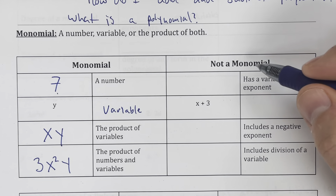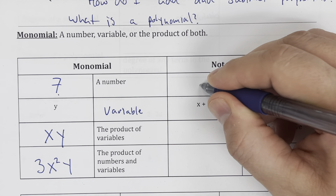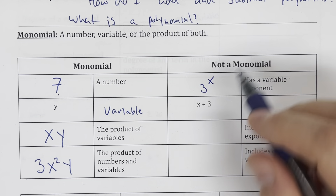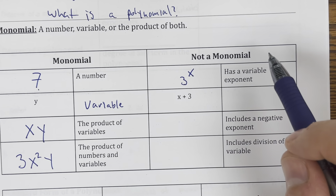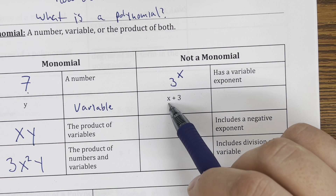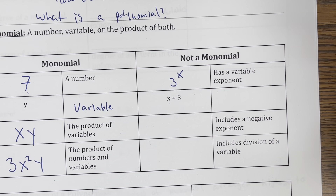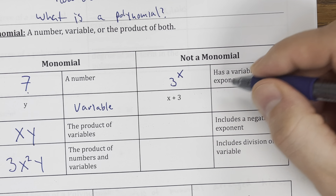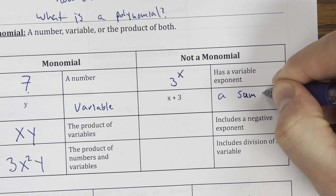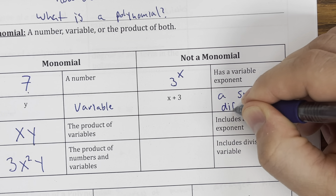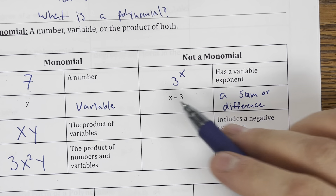Things that are not a monomial: something that has a variable for an exponent — so something like 3 to the x — that is not a monomial because the exponent is a variable. Also, something separated by a plus sign is not a monomial because it includes a sum. A sum or difference is not a monomial; it can only be one term.